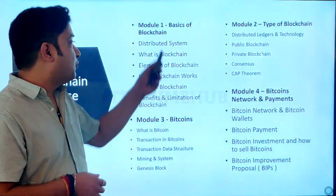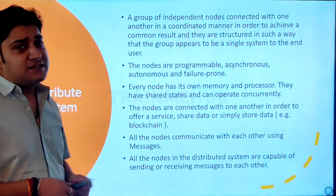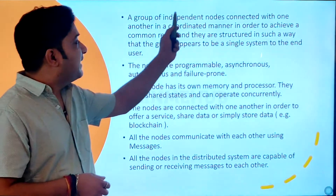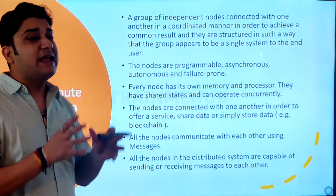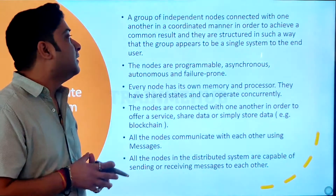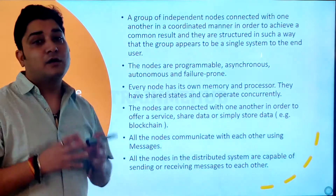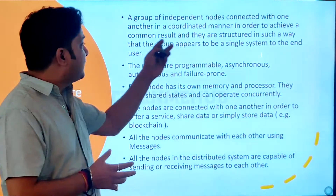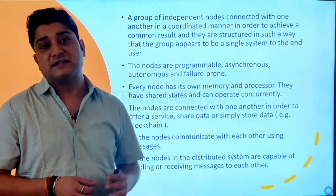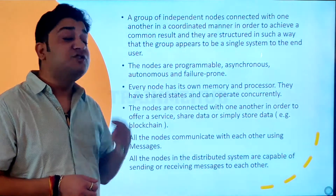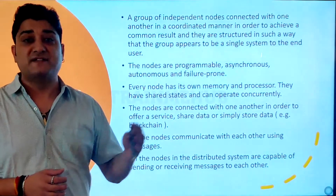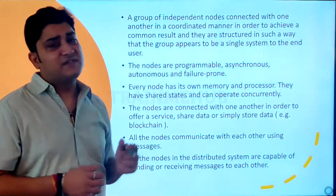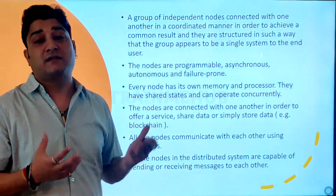A distributed system is a group of independent nodes connected with one another in a very coordinated manner in order to achieve common results. The common results can be sharing of data, sharing of files, or sharing of messages — the common result can be anything.